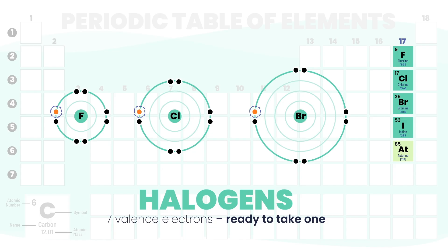While group 1 is eager to give, the halogens are desperate to take. They are the atomic thieves of the periodic table, always on the lookout for that one last electron.